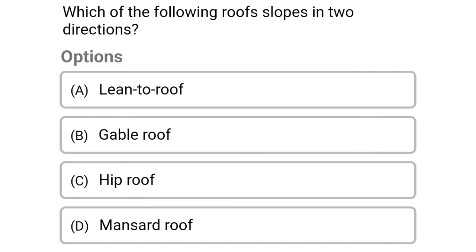Next question: which of the following roofs slopes in two directions? — option A lean-to roof, option B gable roof, option C hip roof, option D mansard roof. The correct answer is option B gable roof.